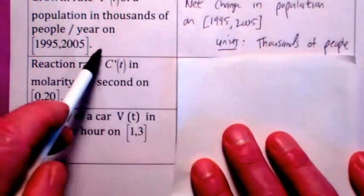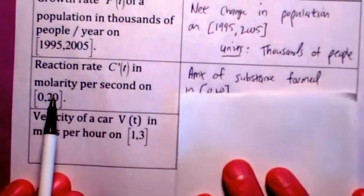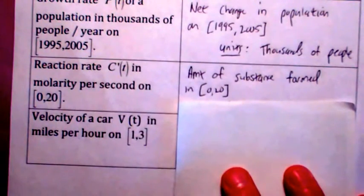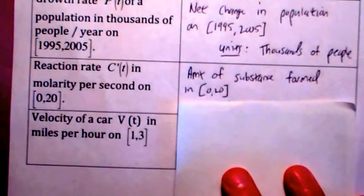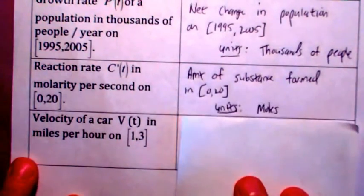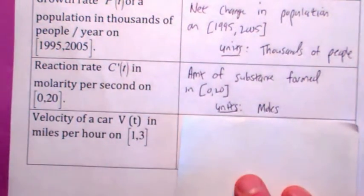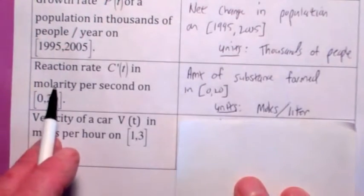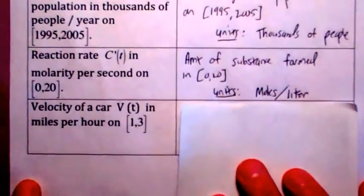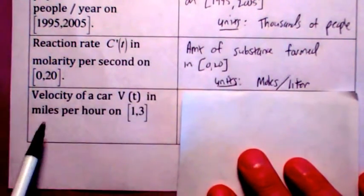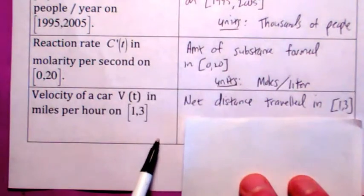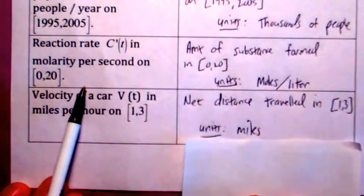If you integrate c prime of t over 0 to 20, you get c of 20 minus c of 0 — the change in concentration, which is the amount of substance formed over that interval. The units would be molarity, which is moles per liter. And if you integrate the velocity function from 1 to 3 hours, you get the net distance traveled — d of 3 minus d of 1 — with units of miles.